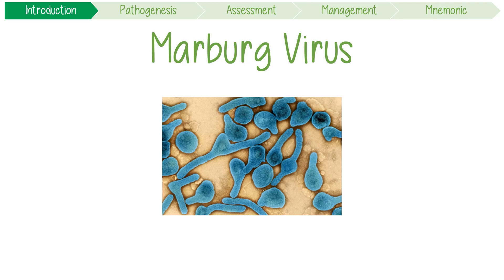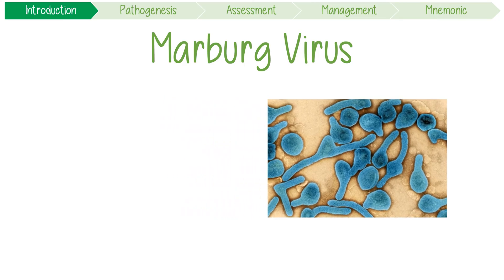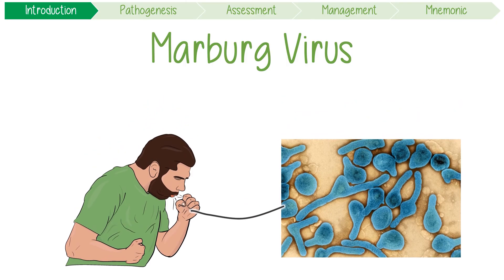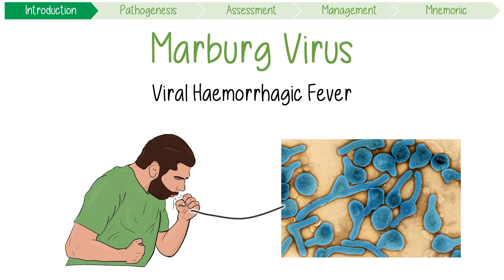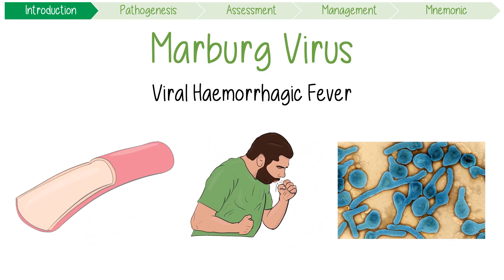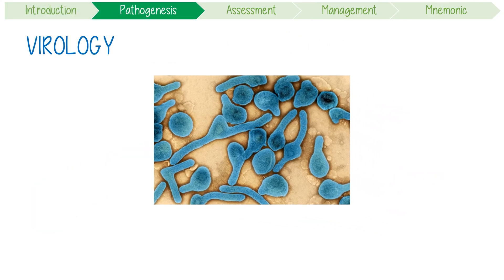Marburg virus is a highly infectious pathogen that causes a rapidly progressive febrile illness, leading to death in approximately 70% of cases. Although it's described as a type of viral hemorrhagic fever, only a few patients actually develop significant bleeding. Instead, most people suffer from a systemic inflammatory response causing shock.